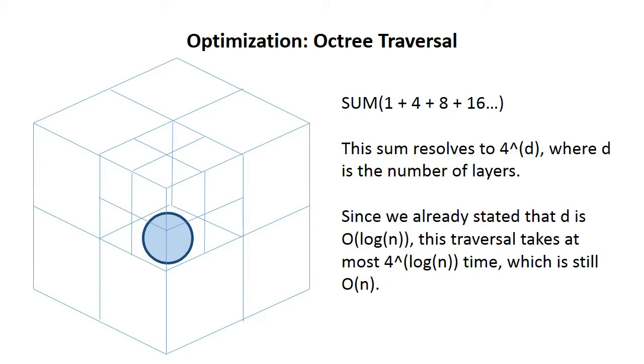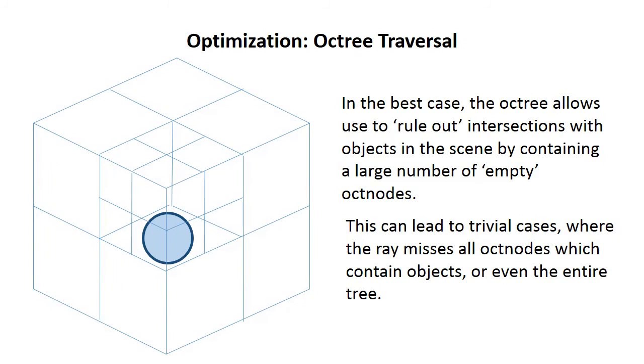In the best case, octrees allow us to rule out intersections with objects in the scene by containing a large number of empty oct nodes. This means that if we shoot a ray at the tree and we miss, or if we miss all of the nodes inside of it that contain objects, we can very quickly throw that ray out and know that we're not going to return a color.